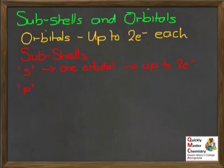Next on our list is the P subshell. A P subshell contains 3 orbitals, and again, since orbitals can hold up to 2 electrons each, that means a P subshell can hold up to 6 electrons.